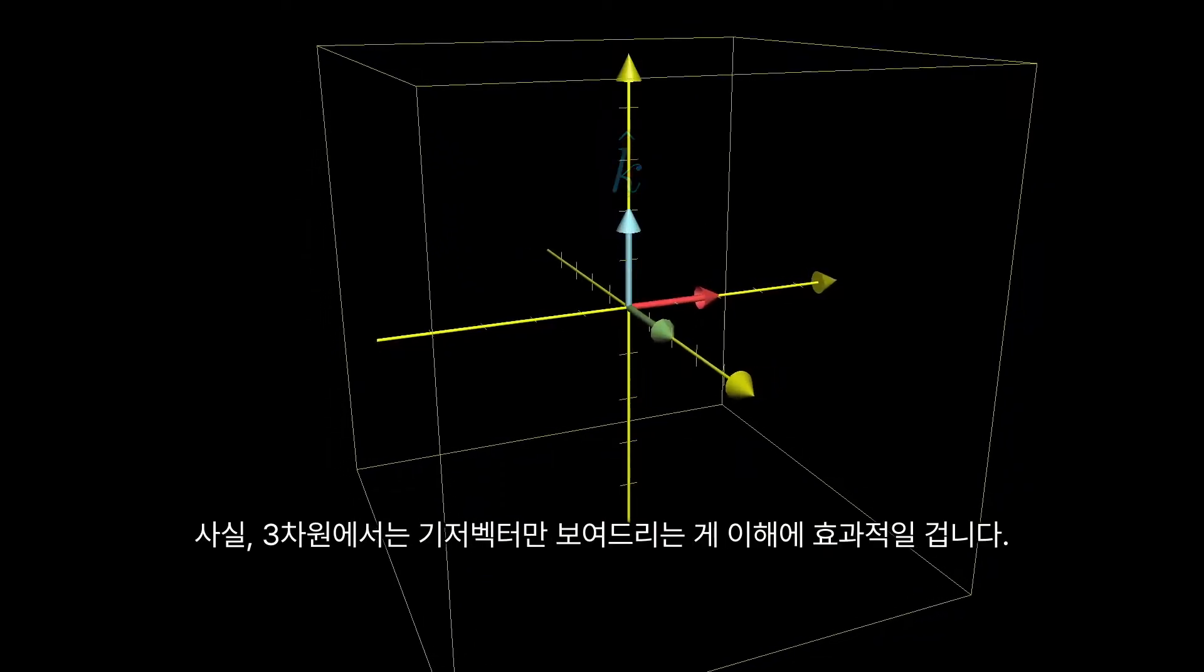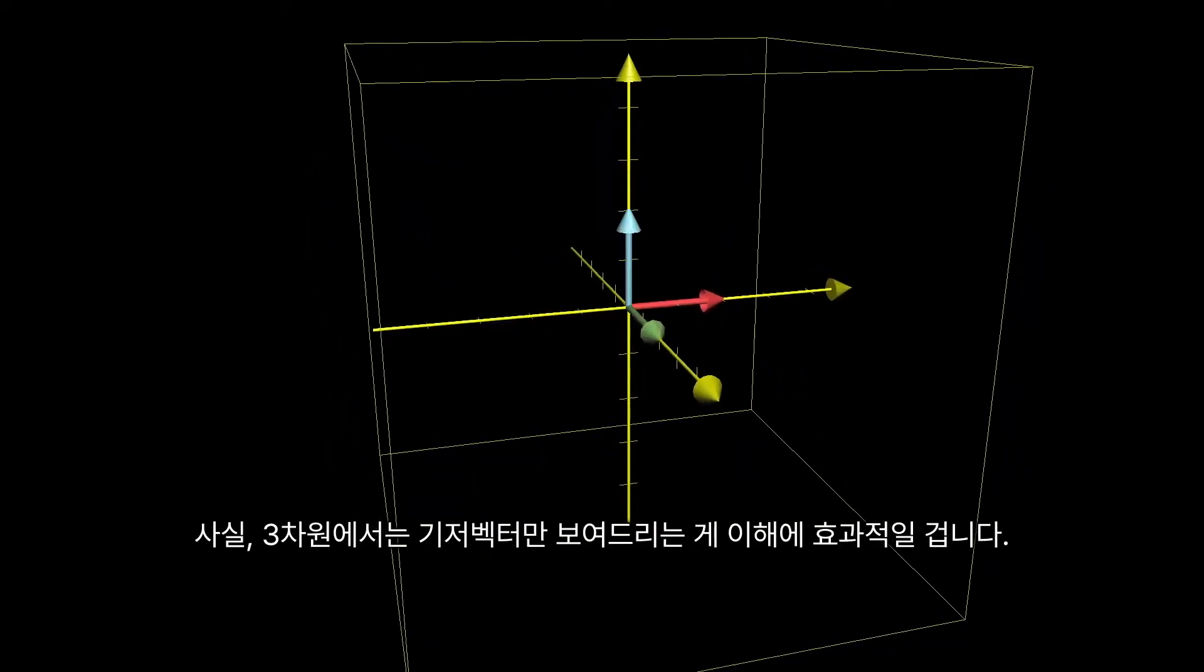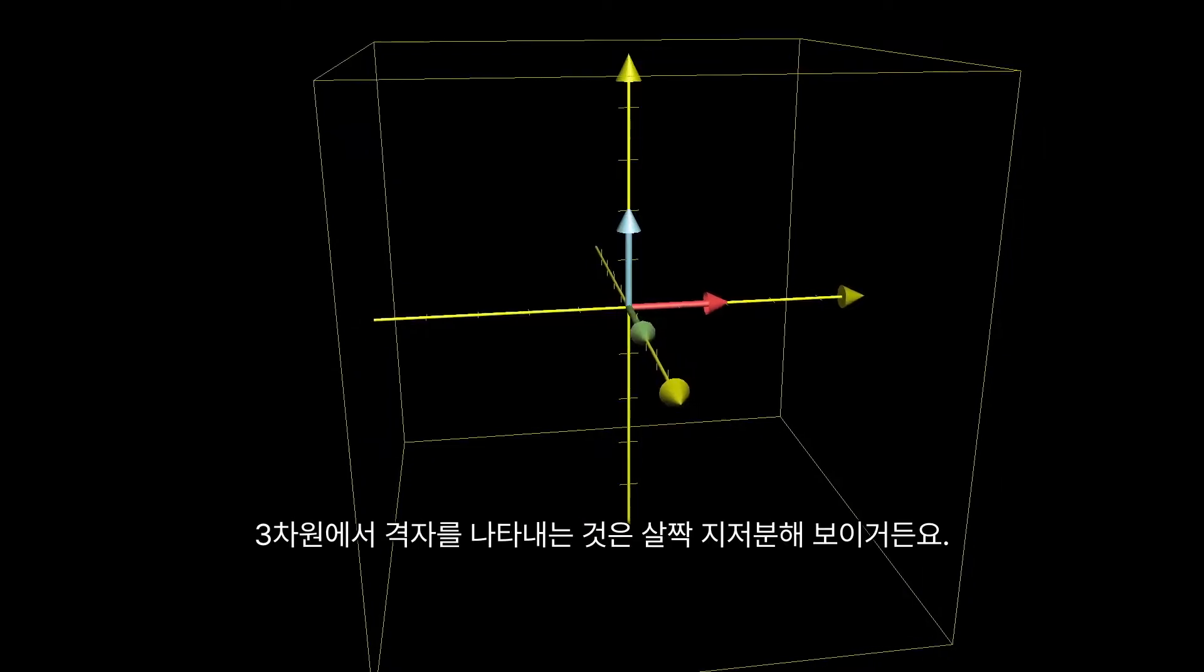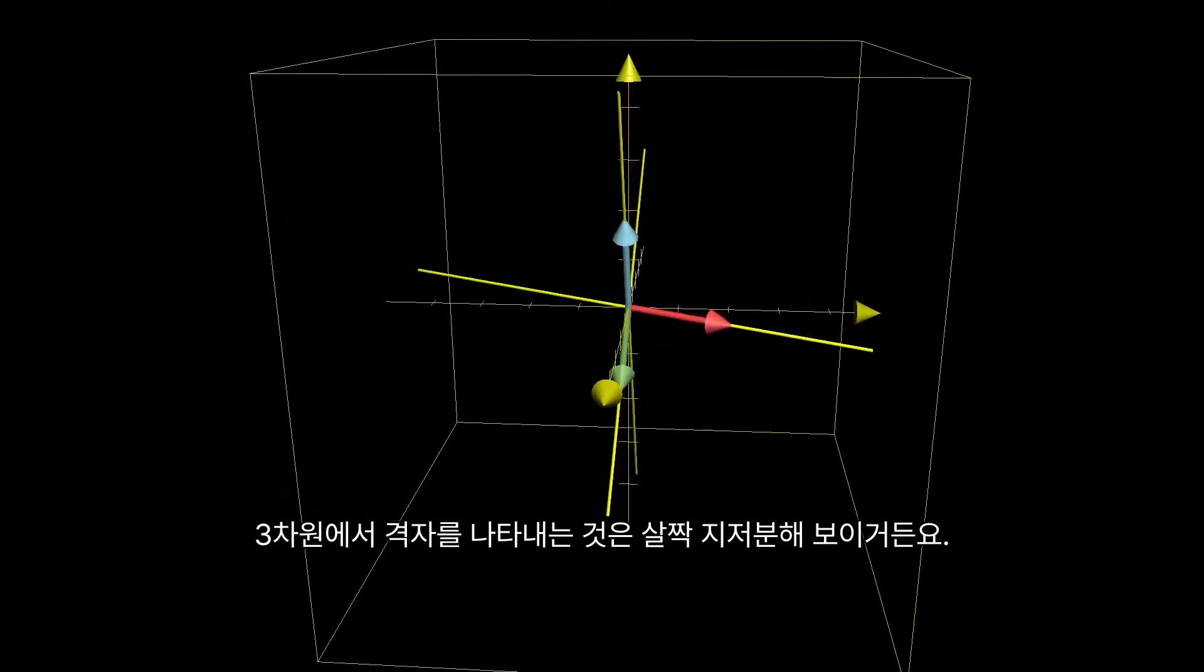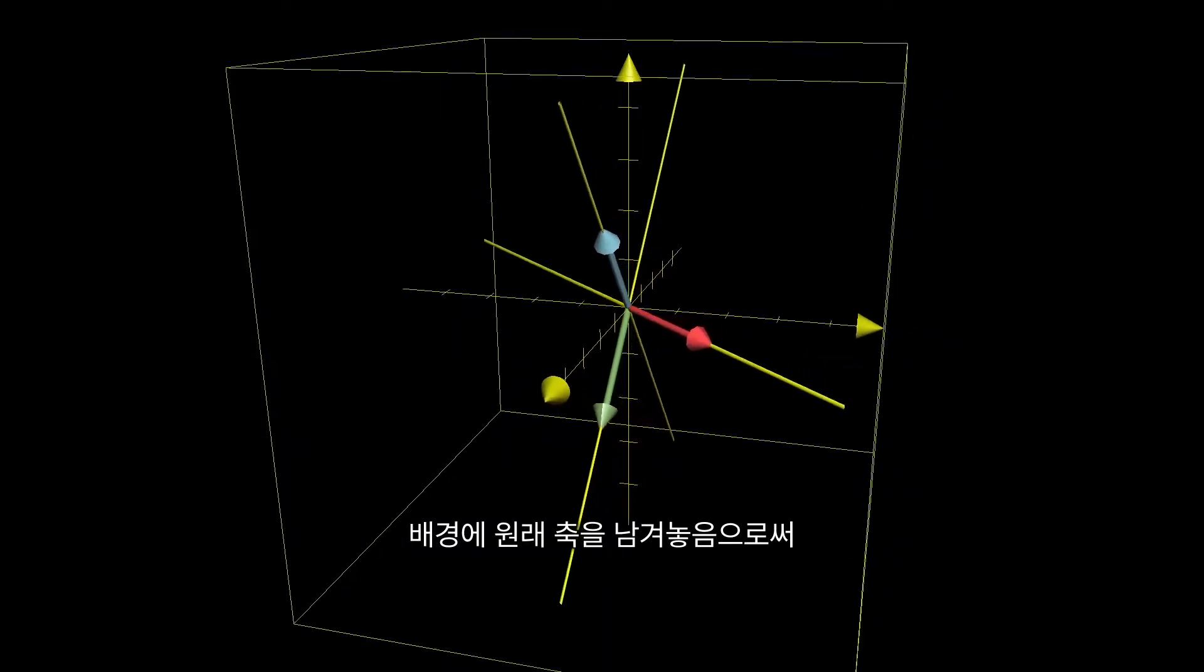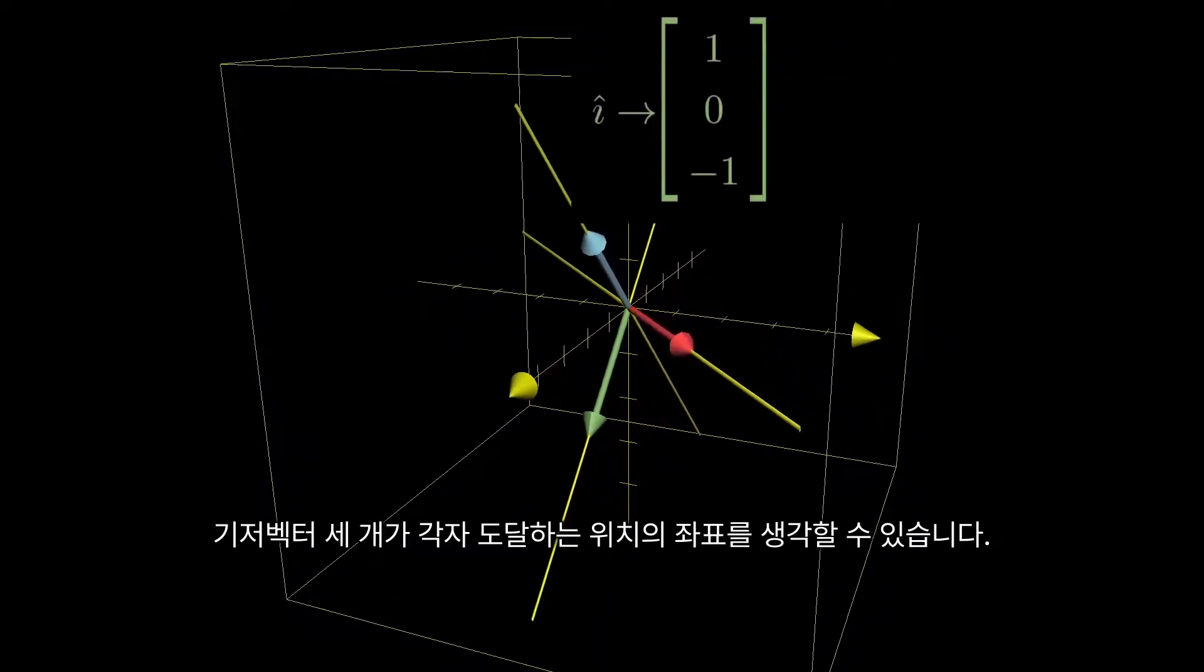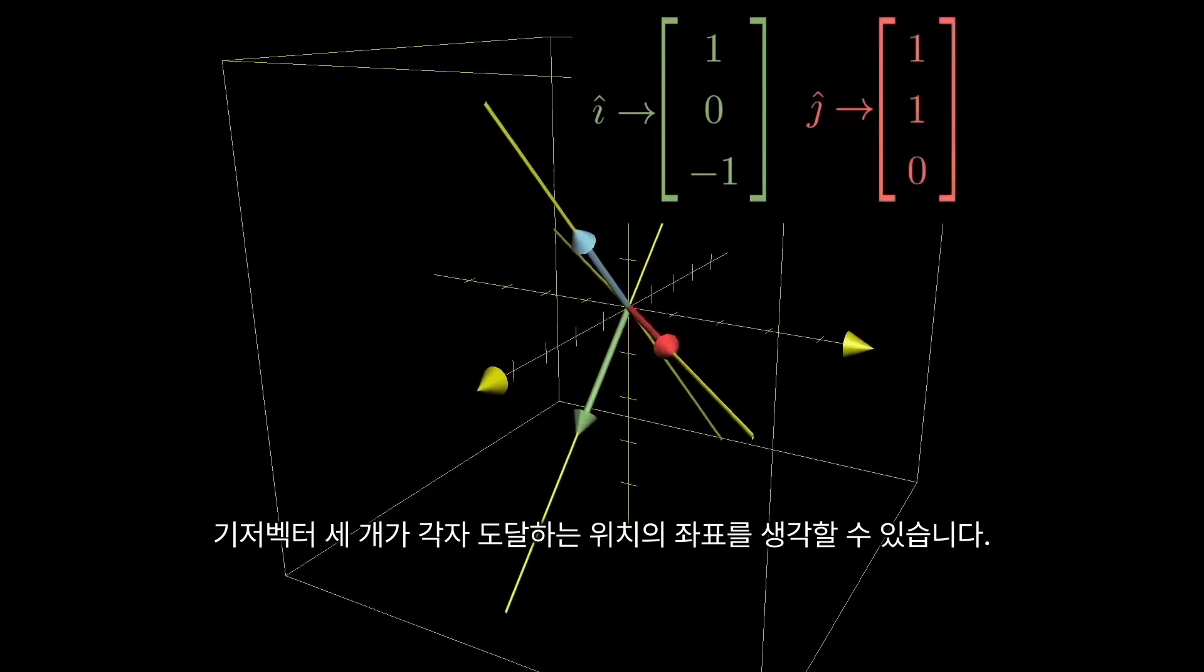In fact, I think it's easier to think about these transformations by only following those basis vectors, since the full 3D grid representing all points can get kind of messy. By leaving a copy of the original axes in the background, we can think about the coordinates of where each of these three basis vectors lands.